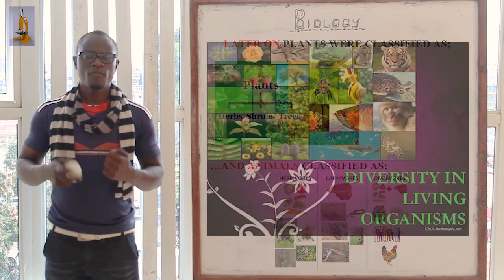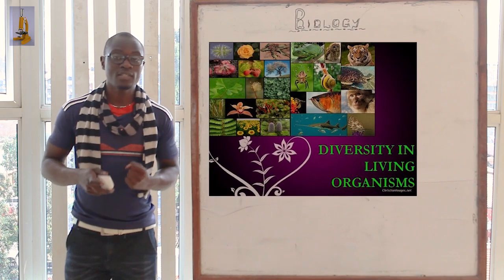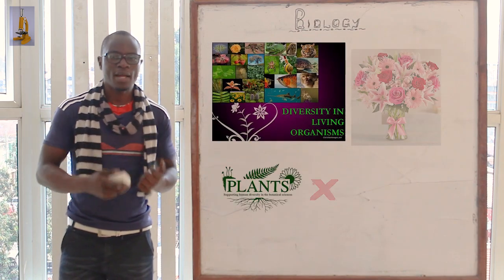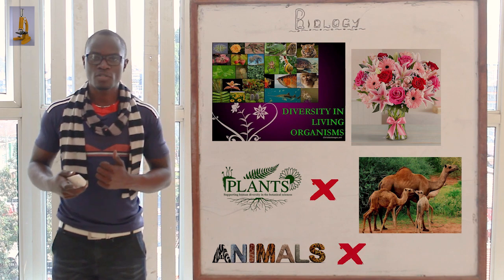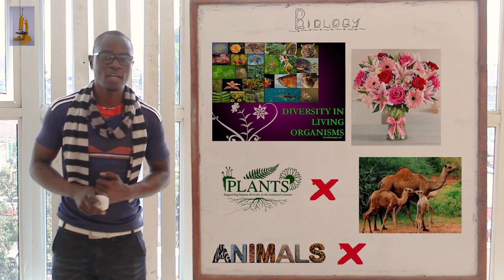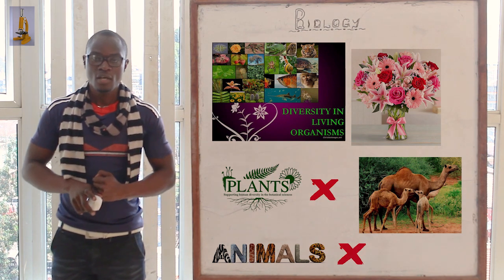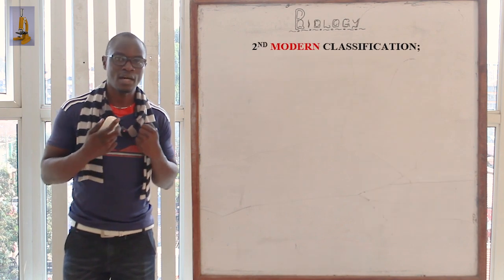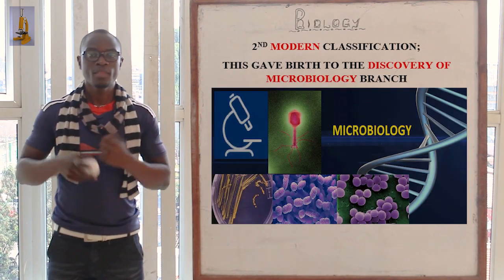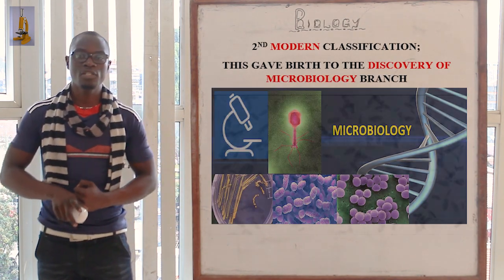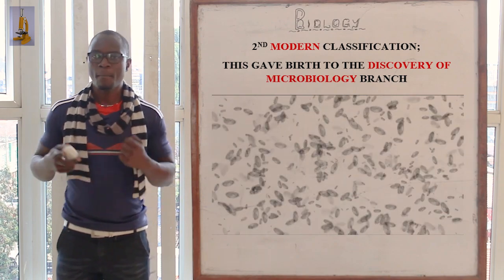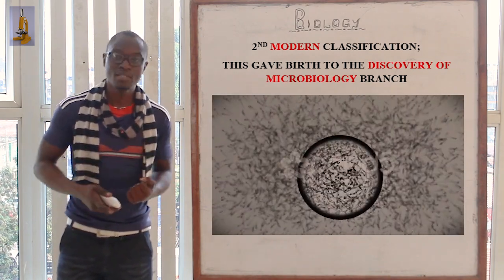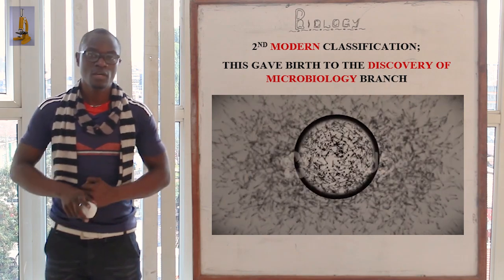However, very many living things have been discovered since time immemorial which are neither plants nor animals. They behave like both plants and animals. In the modern classification, this paved the way for microbiology to be formed, whereby some microbial organisms were behaving like plants and also like animals.